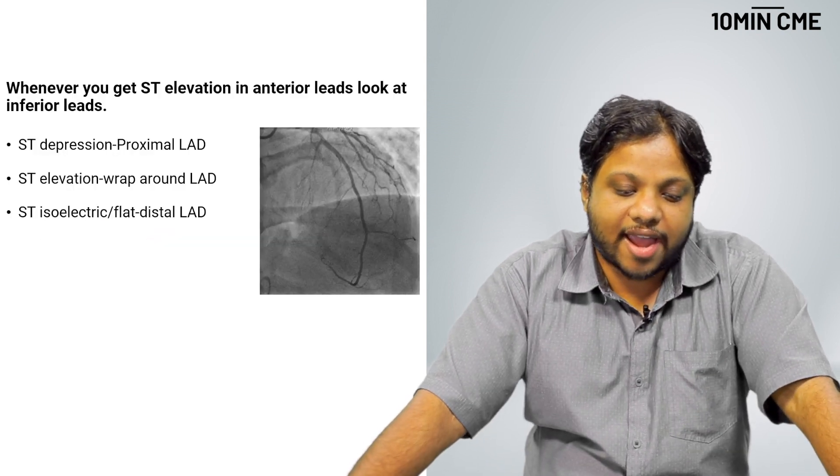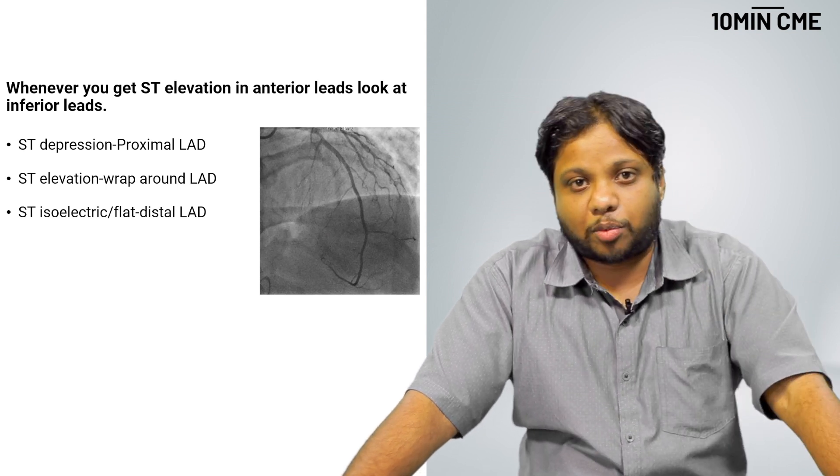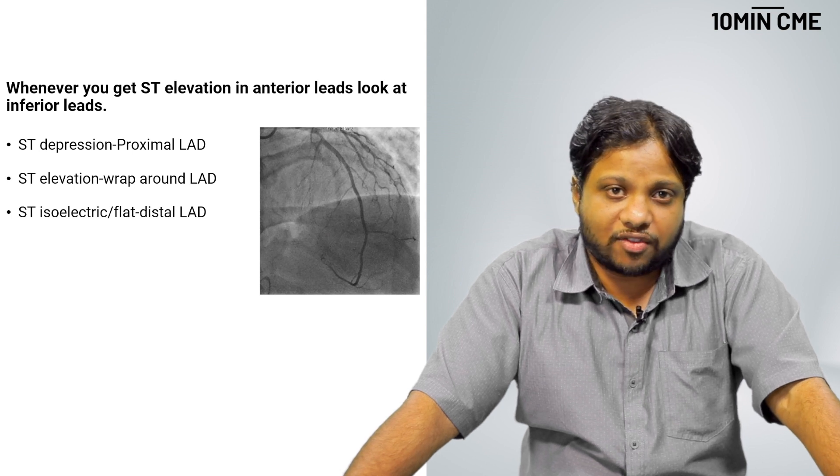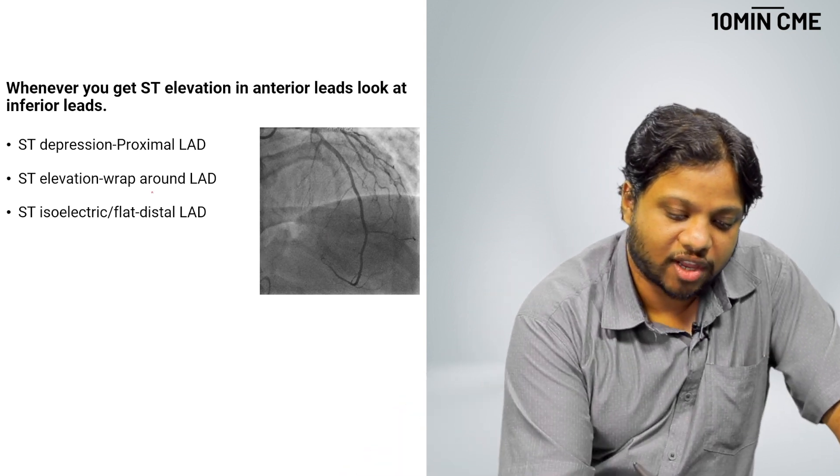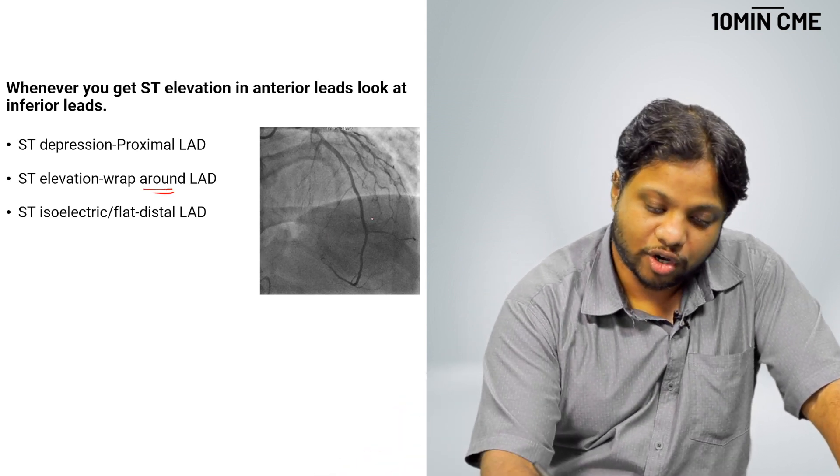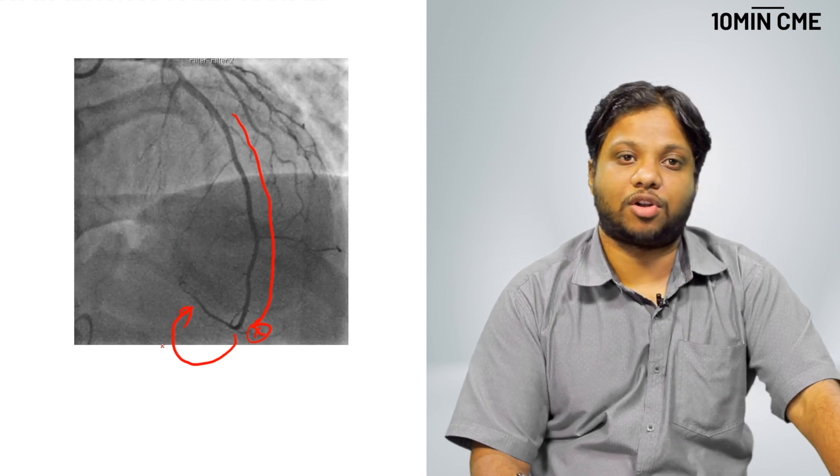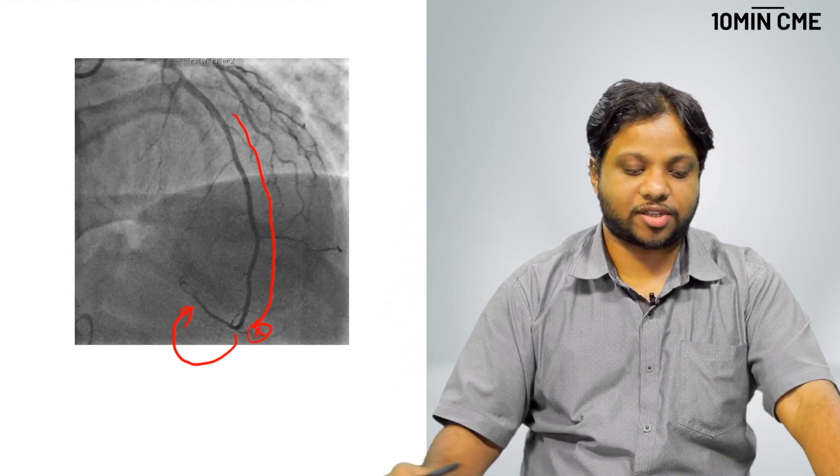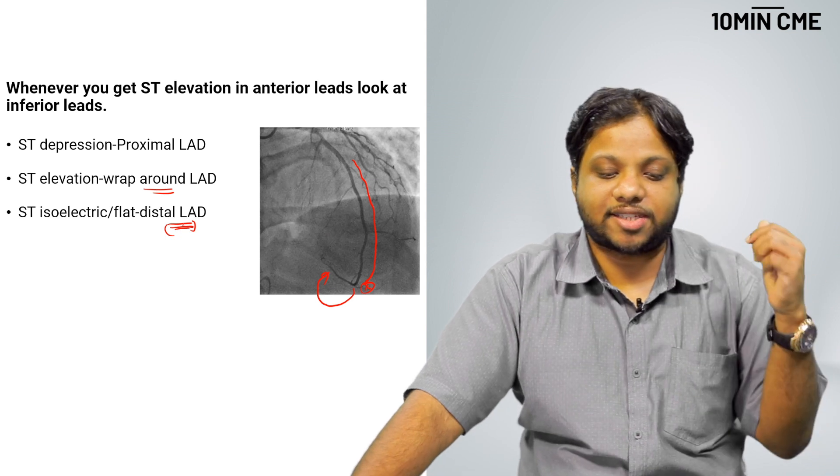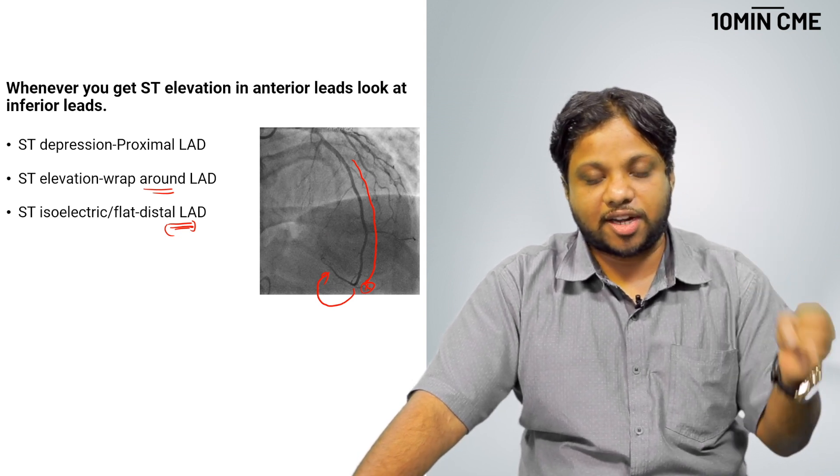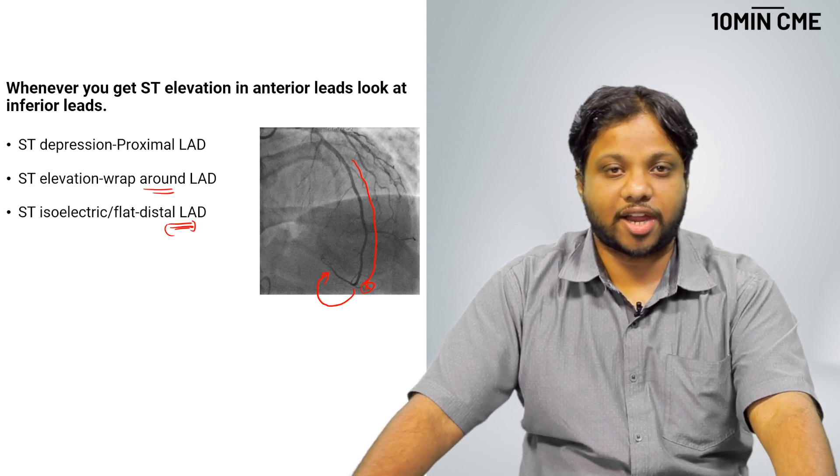Whenever you get ST elevation in the anterior leads, you look at the inferior leads. If you get ST depression, it signifies a proximal LAD. Now, there are other markers for proximal LAD like right bundle branch block and ST elevation in V1 by more than 5 mm. But this is a topic for another video. If you see ST elevation in the inferior leads, you think of a wraparound LAD. This is what you call a wraparound LAD. This is the LAD coming here, reaching the apex which is here, winding around the apex and supplying the inferior wall. Again, you have ST elevation in the anterior as well as the inferior walls. If you see isoelectric or flat ST segment, you think of distal LAD. Whenever you get ST elevation in the anterior leads, you look at the inferior leads. ST depression, proximal LAD. ST elevation, wraparound LAD. ST isoelectric, it is distal LAD. Proximal LAD is involved.